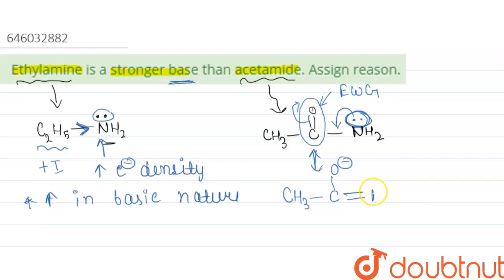O negative and NH2 plus. So as we have seen, the lone pair is not localized on this nitrogen, so the electron density decreases here. Electron density decreases due to electron withdrawing group. If the electron density decreases here, so basic nature decreases, basicity decreases.